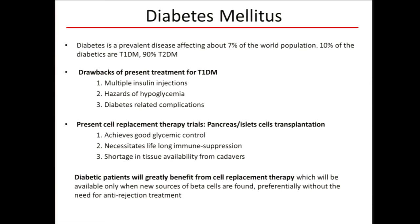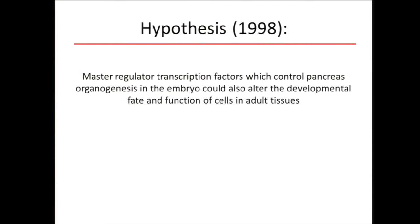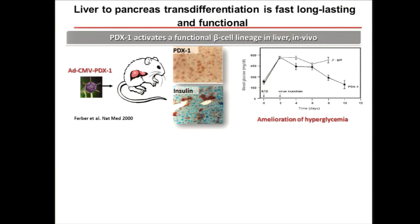Diabetic patients will greatly benefit from cell replacement therapy, which will be available only when a new source of beta cells is found. Our hypothesis back in 1998 was that master regulator transcription factors that control pancreas organogenesis in the embryo could also alter the developmental fate and function of adult cells. This motivated us to analyze whether using a master regulator transcription factor such as PDX1 — a master regulator of pancreas organogenesis — and ectopically expressing it in liver in vivo in mice, would it activate the pancreatic lineage.